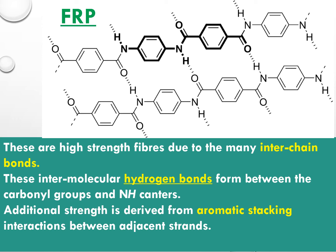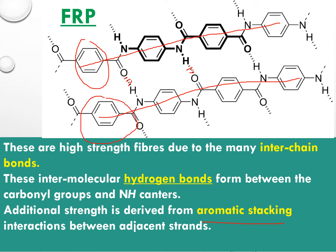The reason aramid fibers strengthen materials is due to inter-chain bonds. Hydrogen bonds form between the chains — one chain has an oxygen atom and the other has a hydrogen atom — forming oxygen-hydrogen bonds. So many hydrogen bonds form between two chains, enhancing intermolecular forces. Along with hydrogen bonding, there is also aromatic stacking, where aromatic rings attract each other through physical forces. These extra forces make the material very strong.